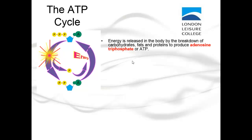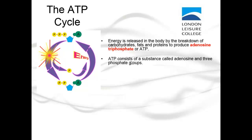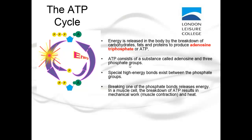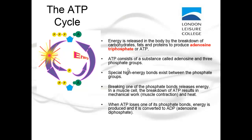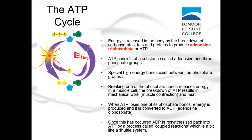Energy is released in the body by the breakdown of carbohydrates, fats, and proteins to produce ATP. ATP consists of adenosine and three phosphate groups. Breaking one of the phosphate bonds releases energy; in a muscle cell this results in mechanical work — muscle contraction — and heat. When ATP loses one phosphate bond, it is converted to ADP (adenosine diphosphate). ADP is then resynthesized back into ATP by a process called coupled reactions, which works like a shuttle system.